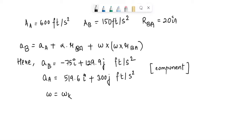W = Wk rad/s, alpha = alphak rad/s². RBA is given as 1.667i feet.